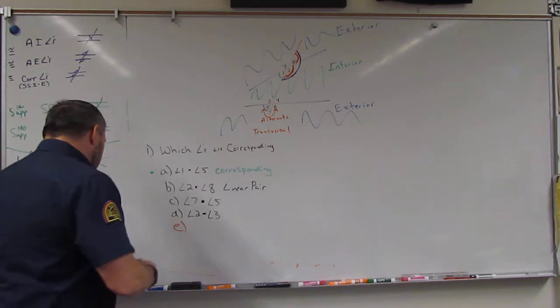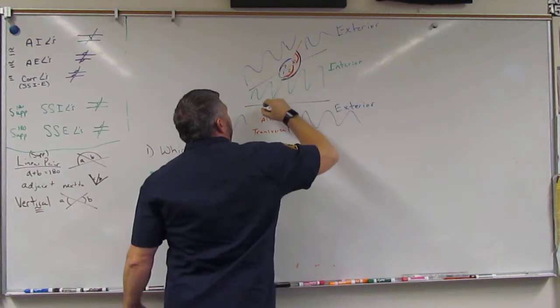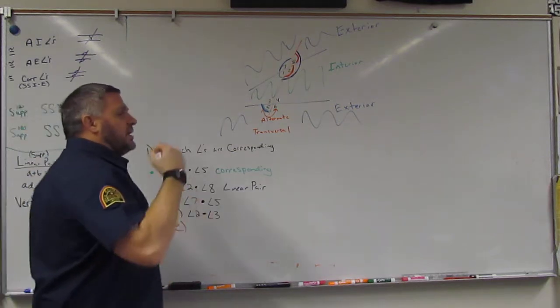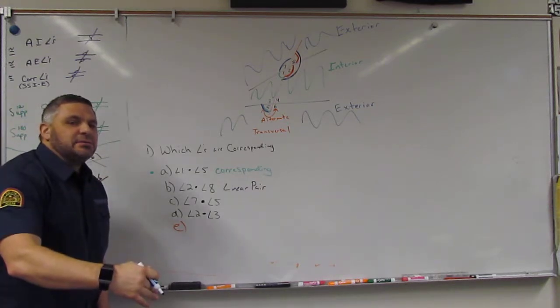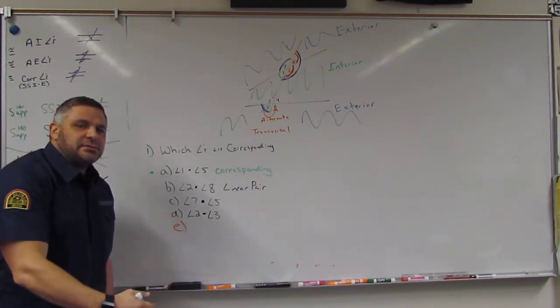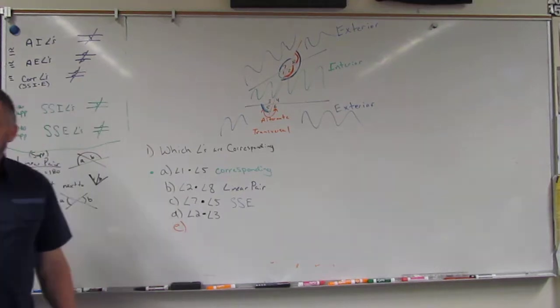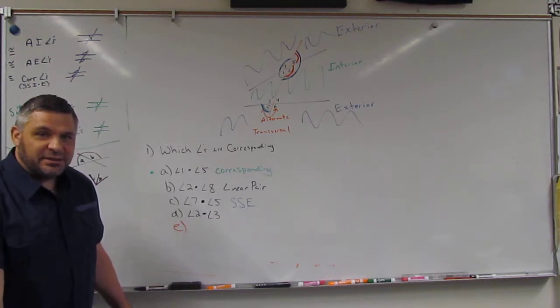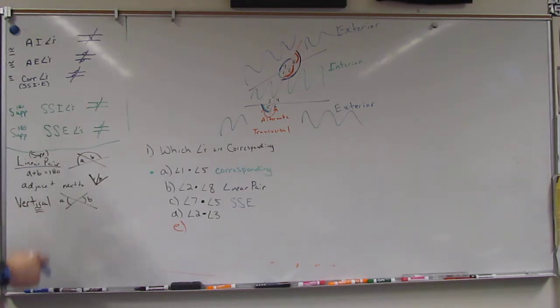Alright. Seven and five. Look at another color. Seven and five. So we're looking at seven and five. So are they on the same side? Yes. Are they both inside? No. Are they both outside? Yes. So they are the same side exterior. Are they adjacent? Are they next to each other? No. Good.